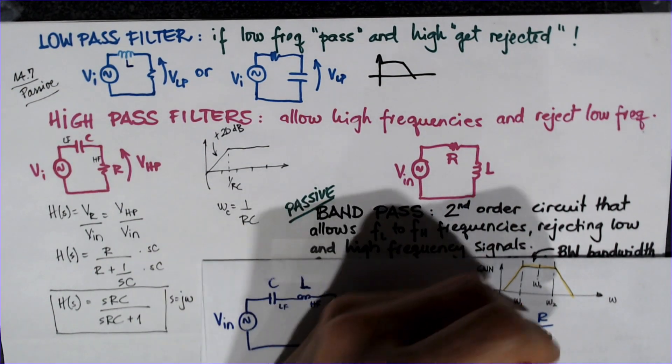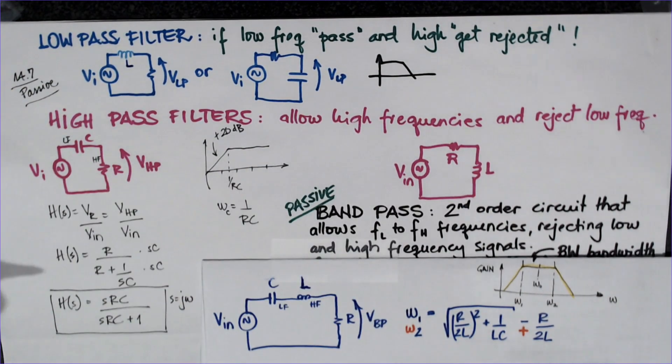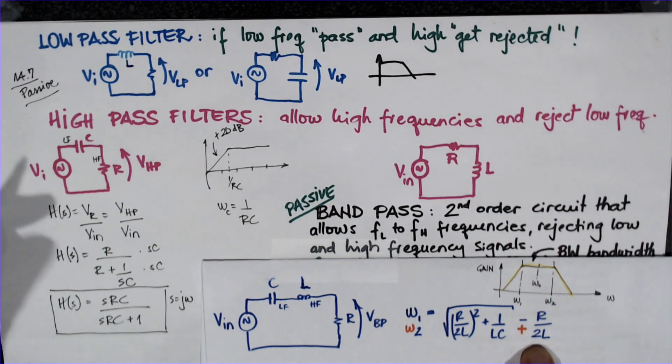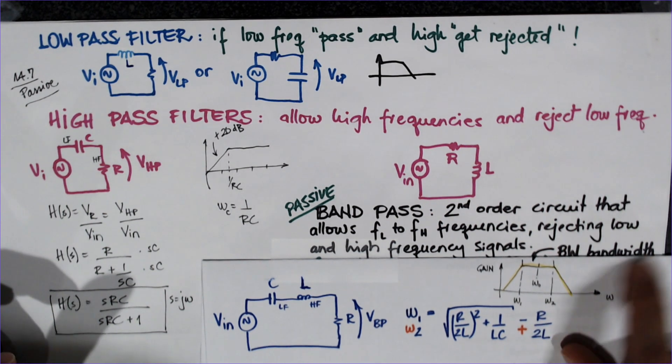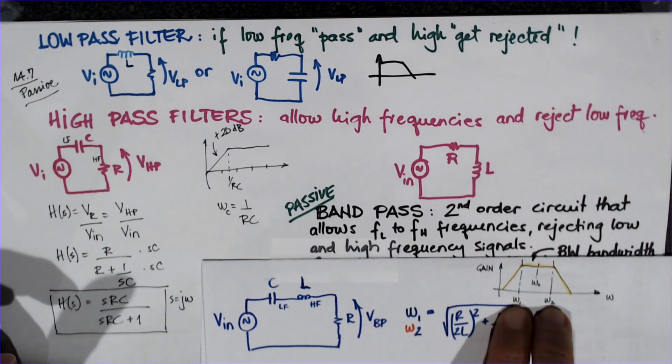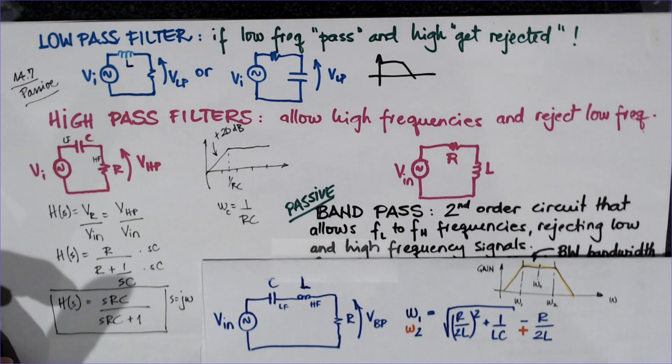So you see that the bandwidth is really R over L. The bandwidth is the difference between Omega 1 and Omega 2. And then Omega naught, which is the center frequency, is 1 over square root of LC, in radians per second.